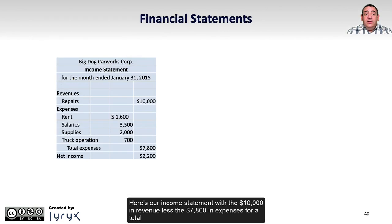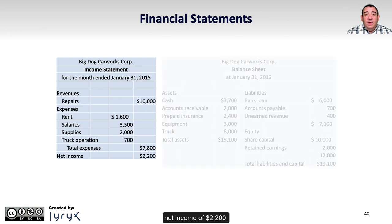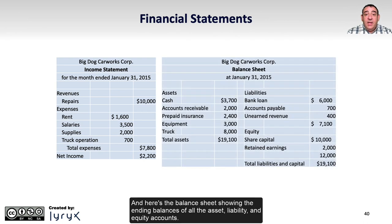Here's our income statement with $10,000 in revenue less $7,800 in expenses for a total net income of $2,200. And here's the balance sheet showing the ending balances of all the asset, liability, and equity accounts.